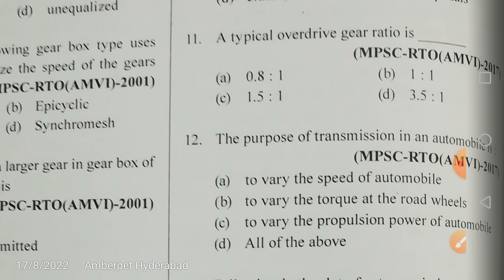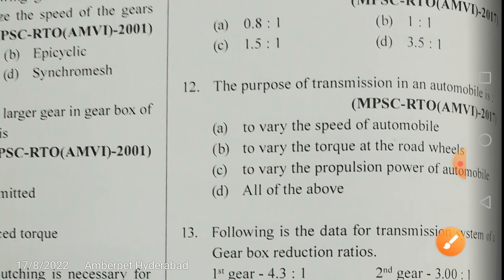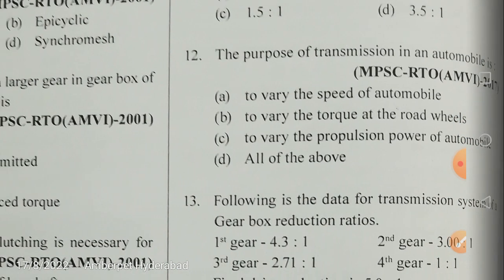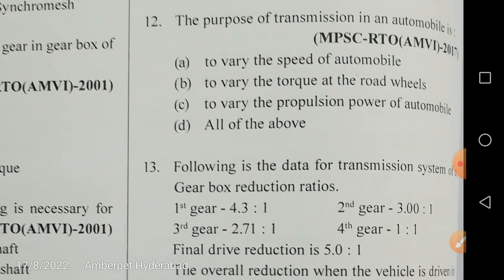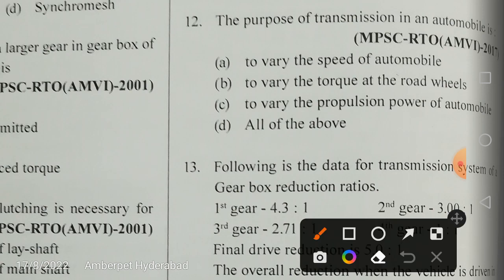A typical overdrive gear ratio is 0.8:1, which is less than one (a fraction). For underdrive it is more than one. The purpose of transmission in an automobile is to vary the speed, vary the torque at the road wheels, and vary the propulsion power — so all of these is the correct answer.